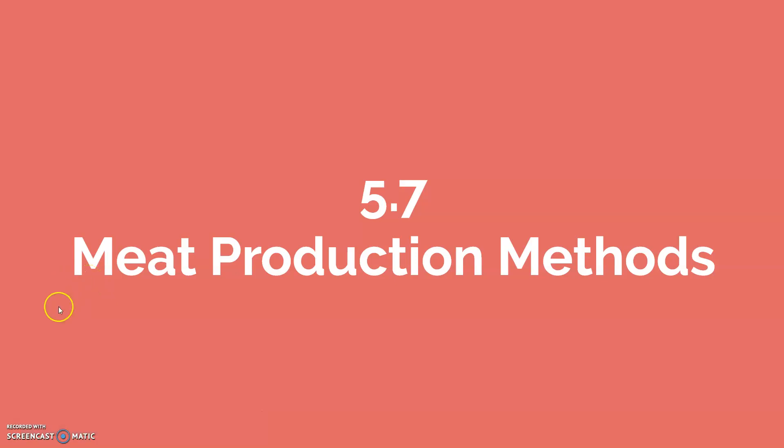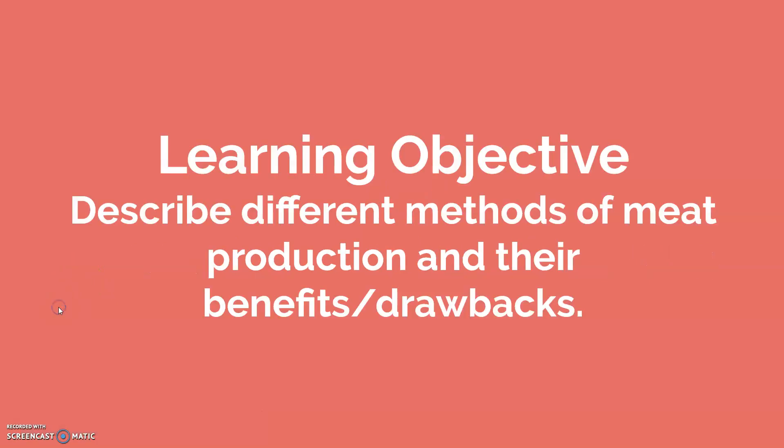Section 5.7 focuses on meat production. We're going to talk about the methods and their benefits and drawbacks.